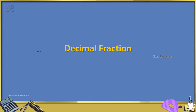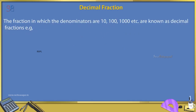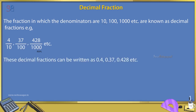Decimal Fraction: The fraction in which the denominators are 10, 100, 1000 etc. are known as decimal fractions. Example: 4/10, 37/100, 428/1000 etc. These decimal fractions can be written as 0.4, 0.37, 0.428 etc.